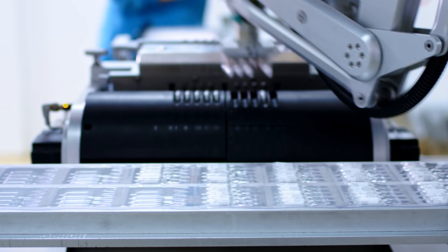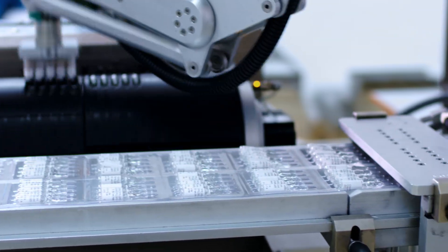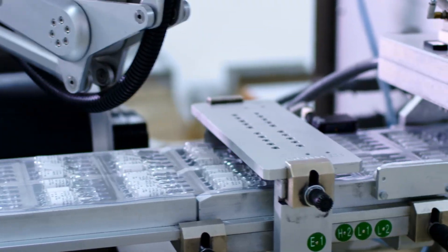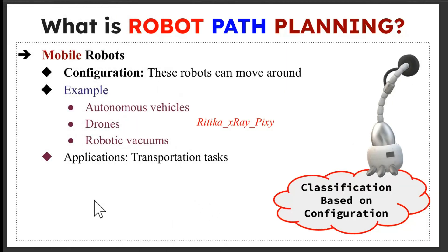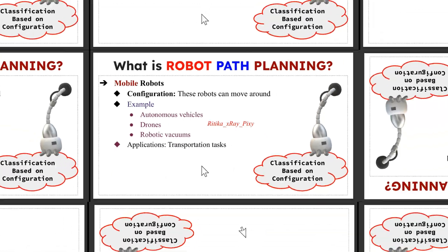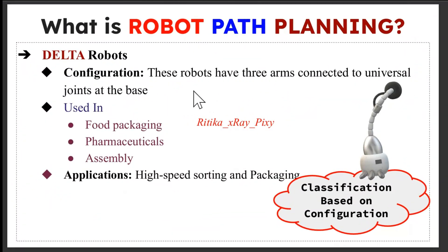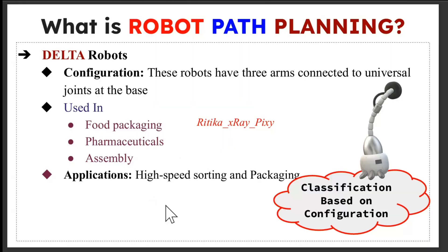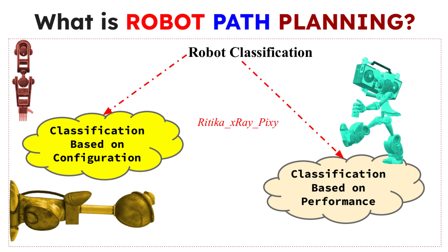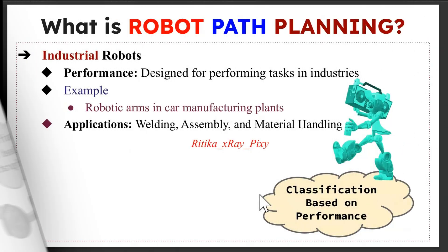Articulated robots have multiple joints giving them a wide range of motion and can be used in manufacturing automation for complex tasks. Then we have mobile robots, which can move around in the environment — examples include self-driving cars and drones. Then we have delta robots, often used in food packaging and assembly. These robots have three arms connected to universal joints, making them fast and accurate in pick-and-place tasks.